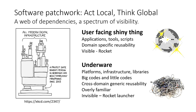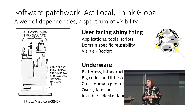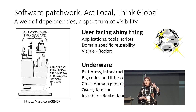I've divided it into two simple layers: the user-facing shiny thing and the underwear. The user-facing shiny thing is a new application with a fancy interface — exactly for genomics or biodiversity, highly visible, it's the equivalent of the rocket. Whereas the underwear is the stuff underneath that you wouldn't normally see. It's big codes and little codes, often cross-domain reusable code, stuff that's always there — effectively like the rocket launcher.